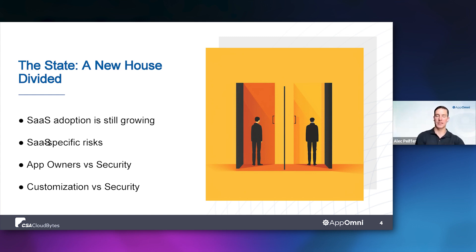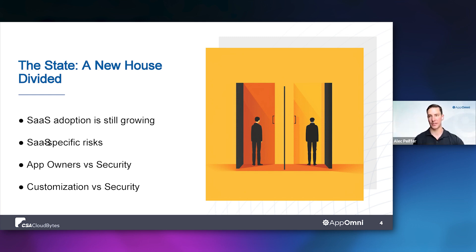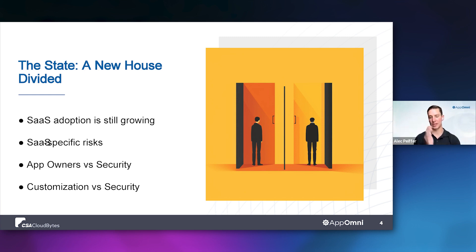You have a variety of SaaS-specific risks that exist, and a lot of them start at the divide that often occurs between app owners and security teams. App owners understand those applications — they may have operated as an administrator for over a decade, with tailored vendor-specific certification and training. But rarely does that training include robust security education on how to effectively secure and permission these applications. Security teams have that security expertise — they understand security principles and generally how to apply them — but each SaaS application presents a unique challenge. You have one side that understands the app and ecosystem, and one side that understands security, but not the overlap between the two. It requires a bridge to be built between these two teams.